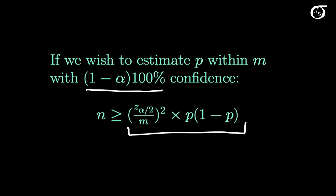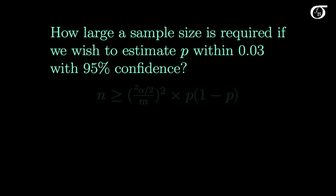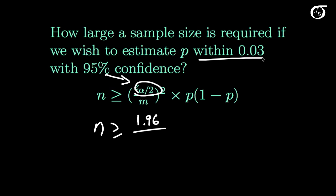Now let's do a couple of examples. How large a sample size is required if we wish to estimate P within 0.03 with 95% confidence? Here's our formula. Now we have all the information we need. We need N being bigger than or equal to. The appropriate Z value for 95% confidence is 1.96. We want to estimate P within 0.03. That is our M. So M is 0.03.